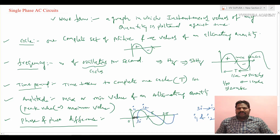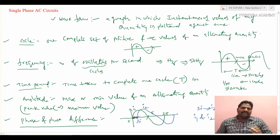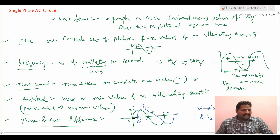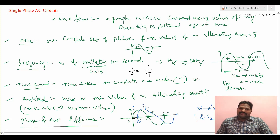There are also terms like average value, RMS value, peak factor, and form factor. But for the fundamentals of alternating quantity, the key terminology is: waveform, cycle, frequency, time period, amplitude, and phase and phase difference. You should understand these concepts clearly. Importantly, the relation between frequency and time period is f equals 1 by T — the reverse of the time period is the frequency.